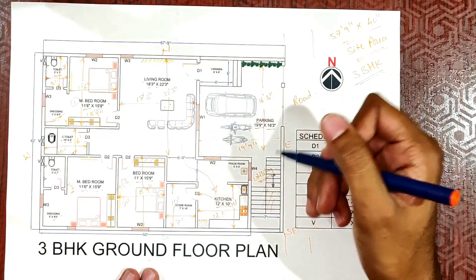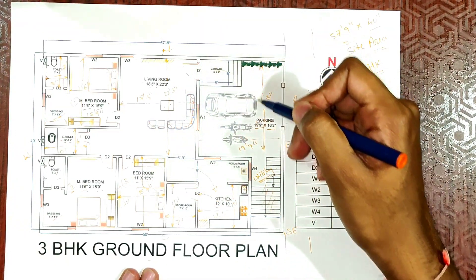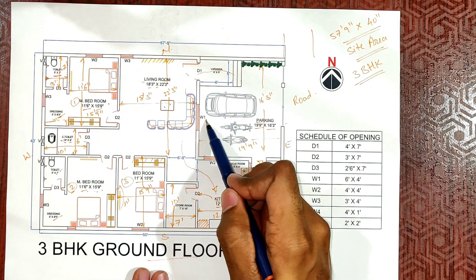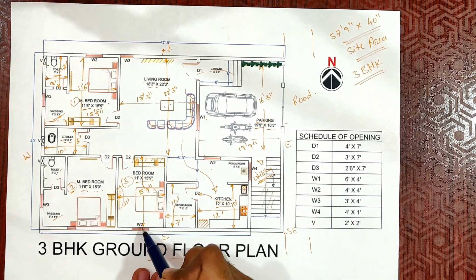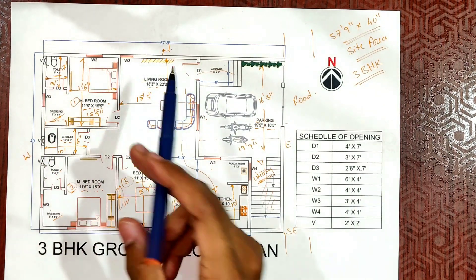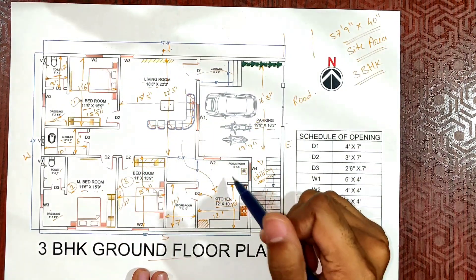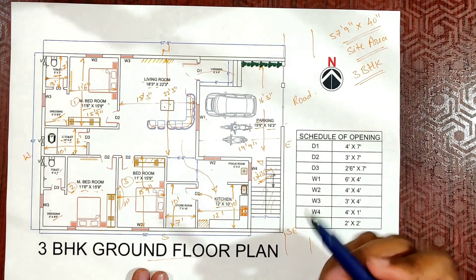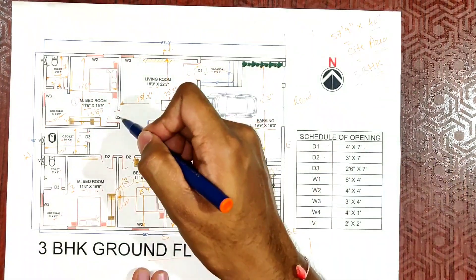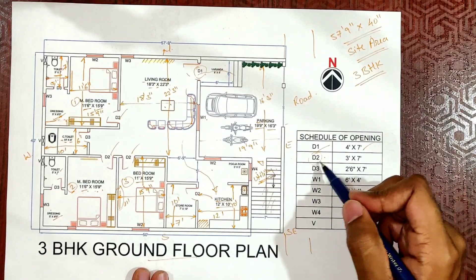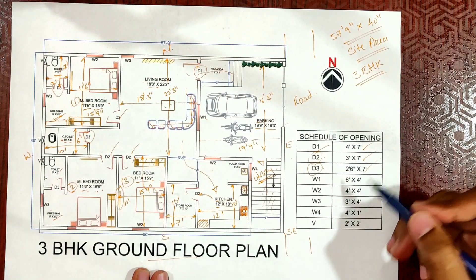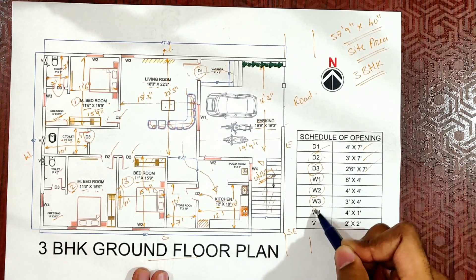You can see the main door access and the windows dimensions — W1, W2, W3, W4. We have ventilators for proper ventilation. You can see the door openings including the bathroom doors. The windows and ventilators are labeled throughout the plan for complete reference.